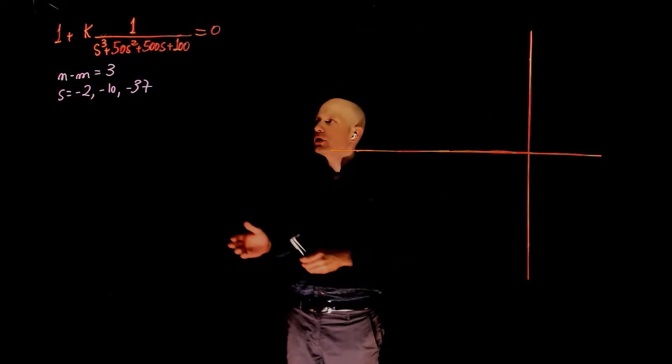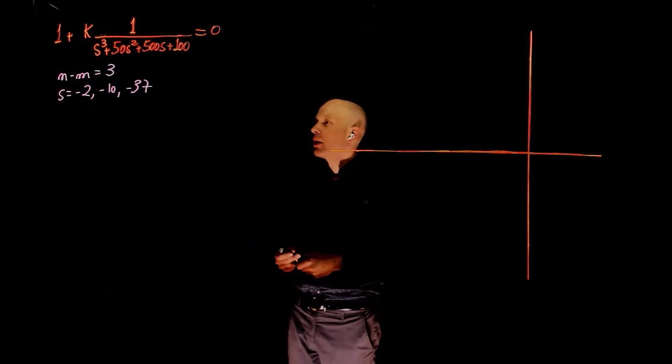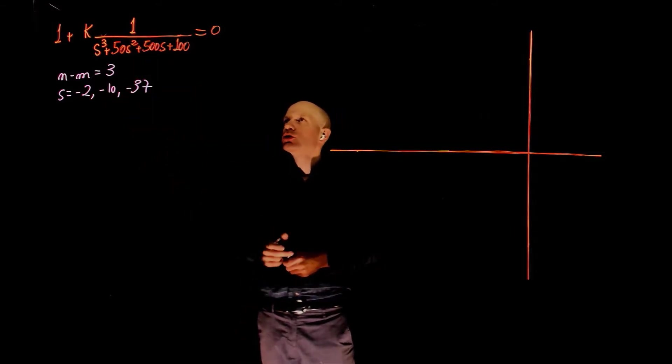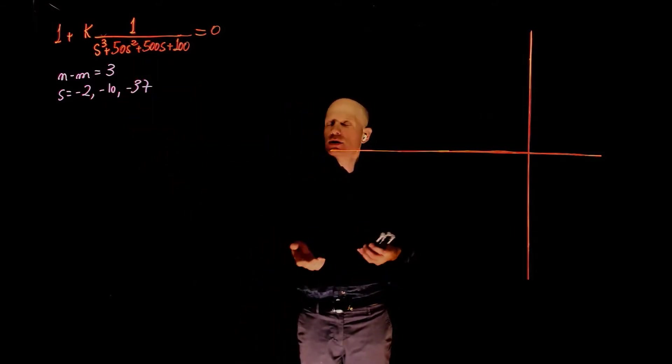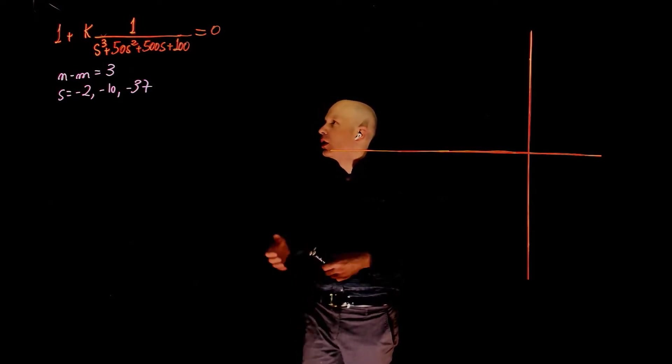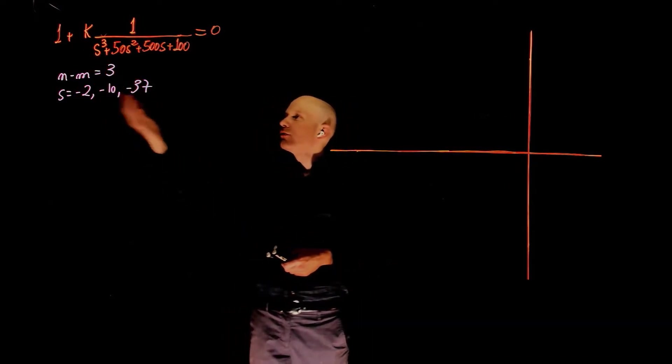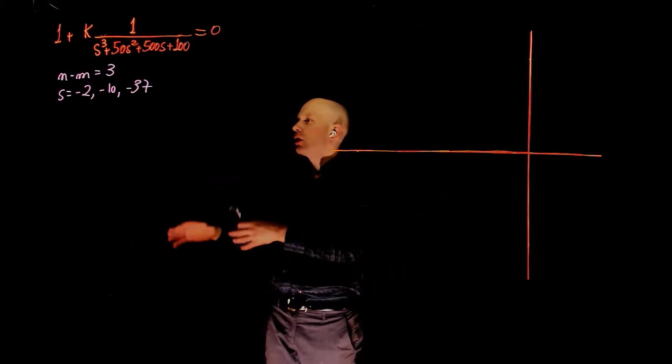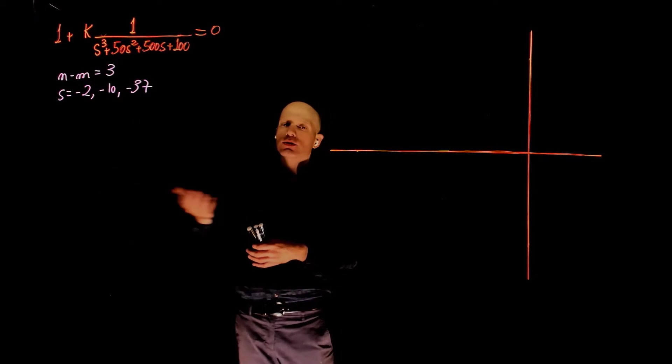In this root locus example, we are given the characteristic equation of a unit feedback system. The characteristic equation is 1 plus k times a function of s, and this is the standard form of the root locus that we need for root locus analysis. We want the value of k to vary from 0 to infinity, and the root locus will represent the location of the poles of the closed loop system as k goes from 0 to infinity.